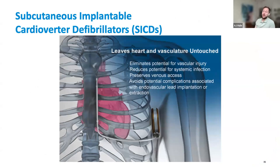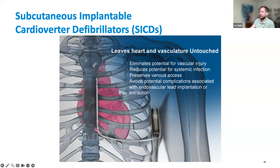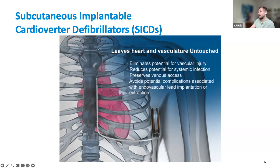We also have SICDs — subcutaneous ICDs. I've never worked with these before when I was at Abbott, and they still don't have a solution. Medtronic is coming out with one that is sub-xiphoid. The idea is that the lead is not transvenous — it's just underneath the skin, tunneled across, and the shock vector goes across the heart with the can underneath the arm. This eliminates the risk of vascular injury for patients with occlusion or higher infection risk. We saw these often in patients with drug issues, as it's good to avoid putting anything in the vasculature that could get infected, and it preserves venous access.